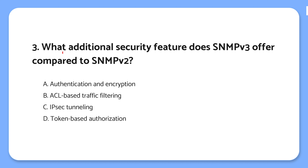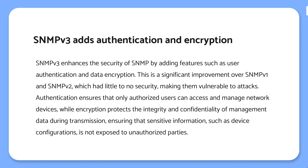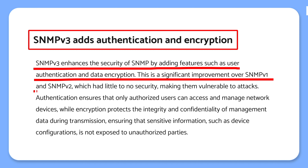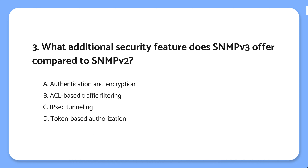Question 3: What additional security feature does SNMPv3 offer compared to SNMPv2? The knowledge point is that SNMPv3 adds authentication and encryption. SNMPv3 is more secure than older versions because it adds authentication and encryption, ensuring that only authorized people can manage devices and that no one can intercept sensitive information. The correct answer is: SNMPv3 improves security by adding two things — authentication and encryption.